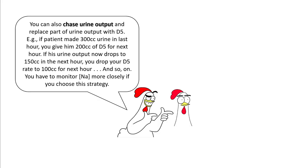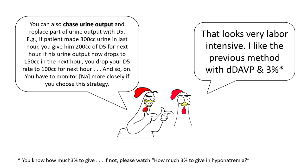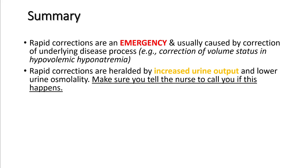Some people also go for chasing the urine output and replacing part of urine output with D5W. For example, if your patient is making 300 cc's of urine every hour, you can start D5W at 200 cc's per hour and monitor sodiums. If urine output drops the next hour to say 150 cc's, you drop your D5W replacement to 200 cc's. You are trying to chase urine output every hour — this is certainly more labor intensive and requires closer sodium monitoring.